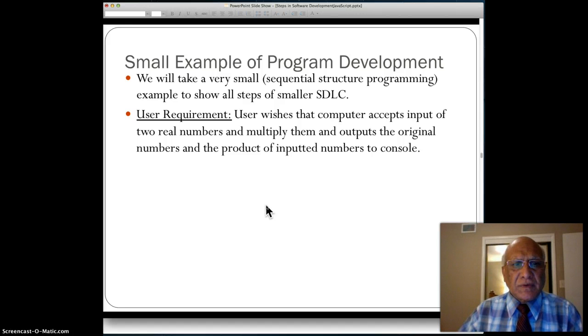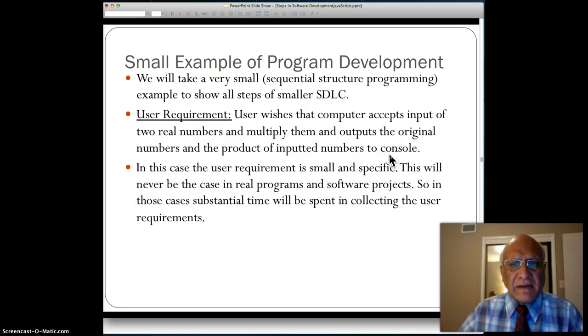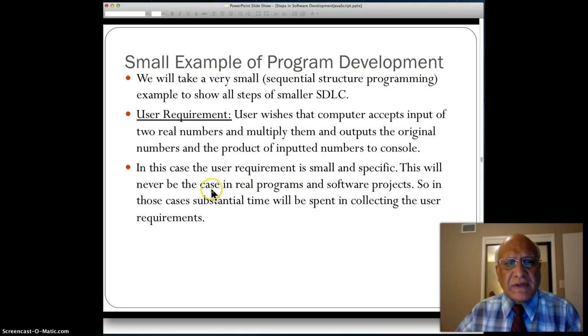So let's say the user requirement is very simple. User wishes that the computer accepts input of two real numbers, multiply them, and outputs the original numbers and the product of inputted numbers to console. Real numbers are ones that can contain fractions, we'll talk about them a bit more. In this case, user requirements are small and specific. This will never be the case in real programs and software projects. In those cases, substantial time will be spent in collecting the user requirements.